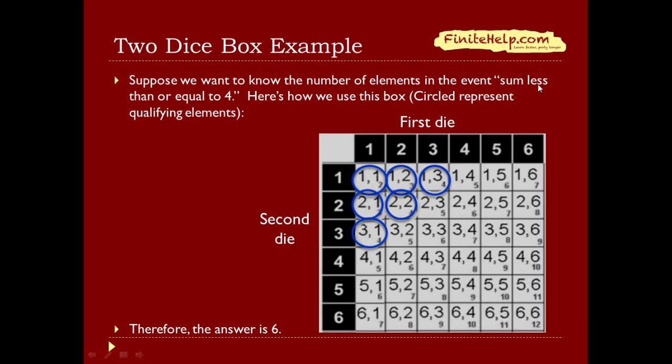For this event, sum less than or equal to 4, we add the number of circles up here, and the answer is 6.